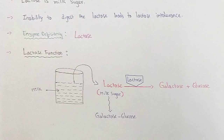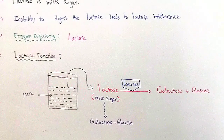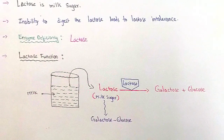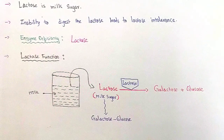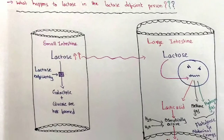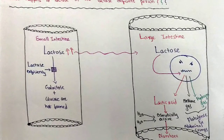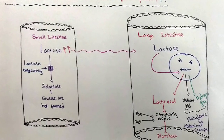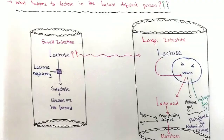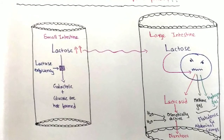Normally, lactase hydrolyzes lactose to galactose plus glucose in the small intestine. But in lactase-deficient persons, lactose is not hydrolyzed in the small intestine, so it moves into the large intestine where intestinal bacteria use this lactose as an energy source and ferment it, producing different products.